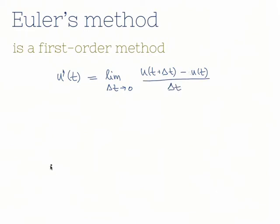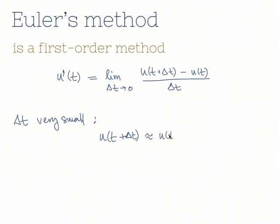Assuming that delta t is already very very small, we approximated the derivative by dropping the limit. So we can write that u at t plus delta t is approximately equal to u at t plus u prime of t times delta t.